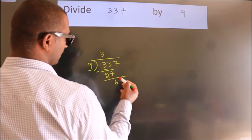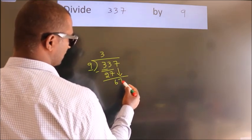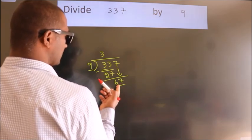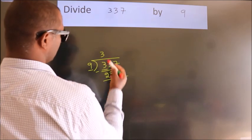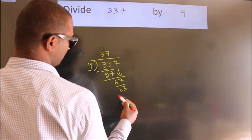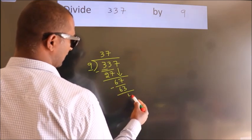After this, bring down the beside number. So 7 down. So 67. A number close to 67 in the 9 table is 9 sevens, 63. Now we subtract. We get 4.